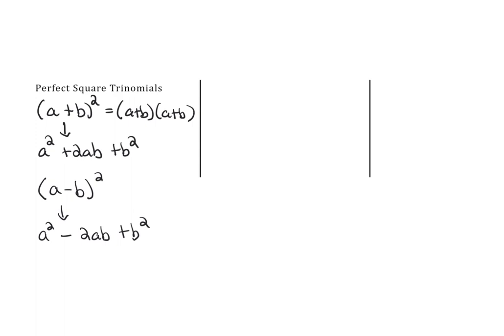At first this looks intimidating but once you see an example it's not too bad. What you're really looking for are perfect squares on your first term and your last term. The middle term does not have to be a perfect square, it just has to follow this pattern. Let's see an example.